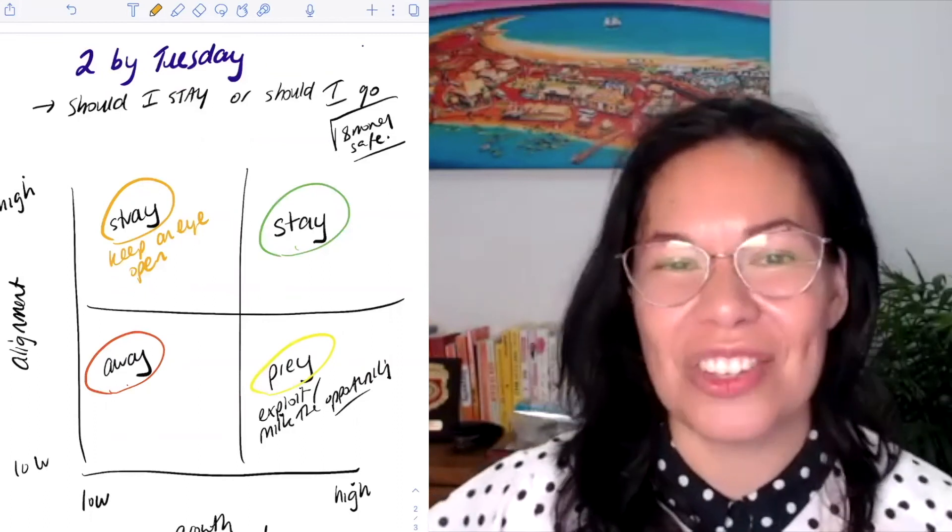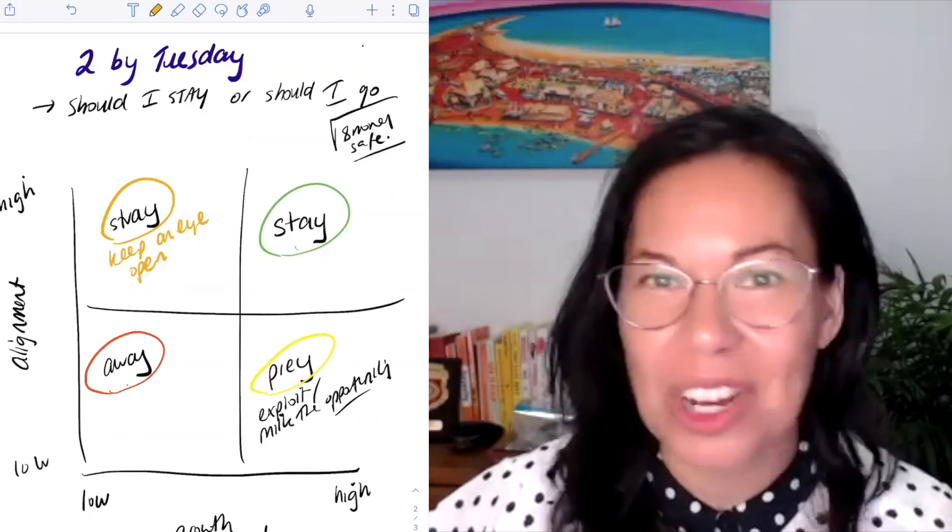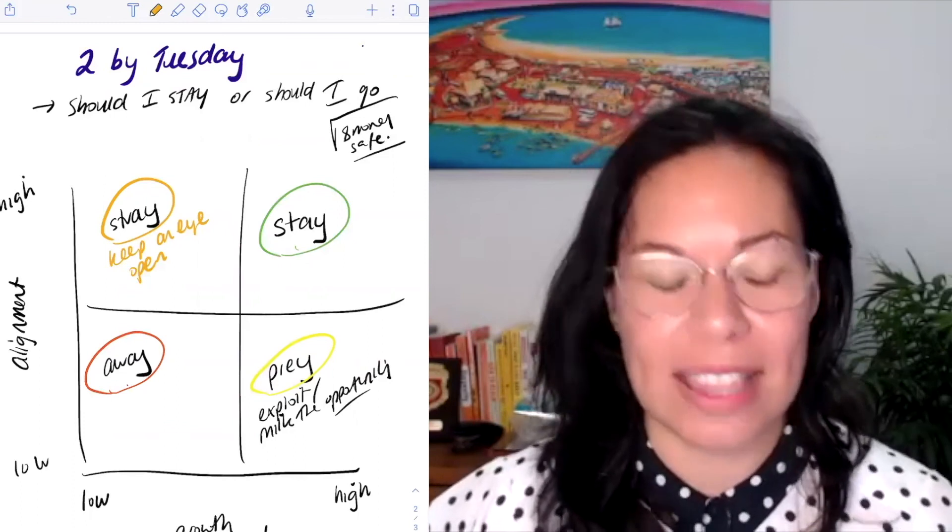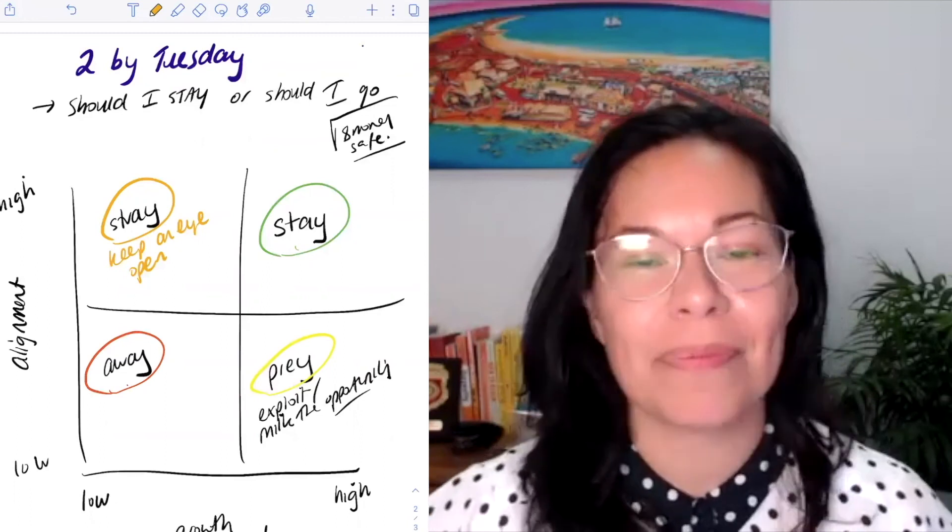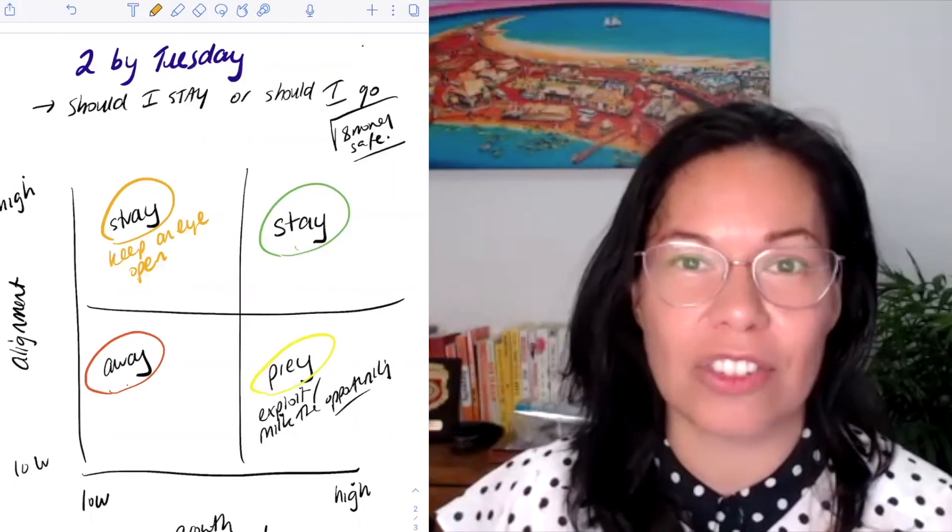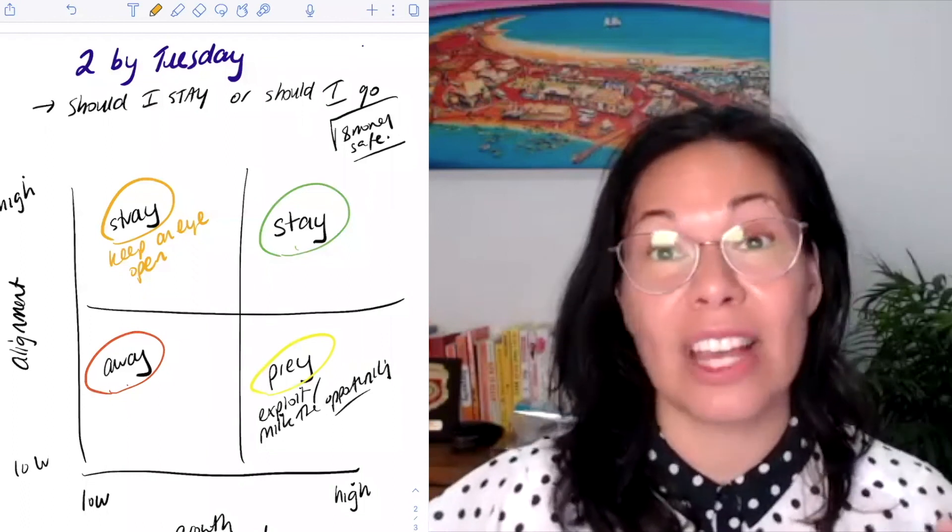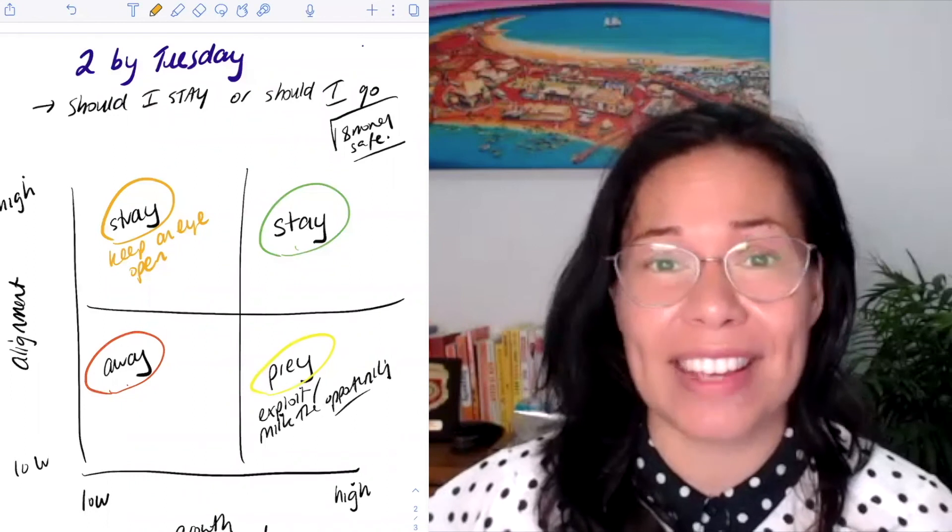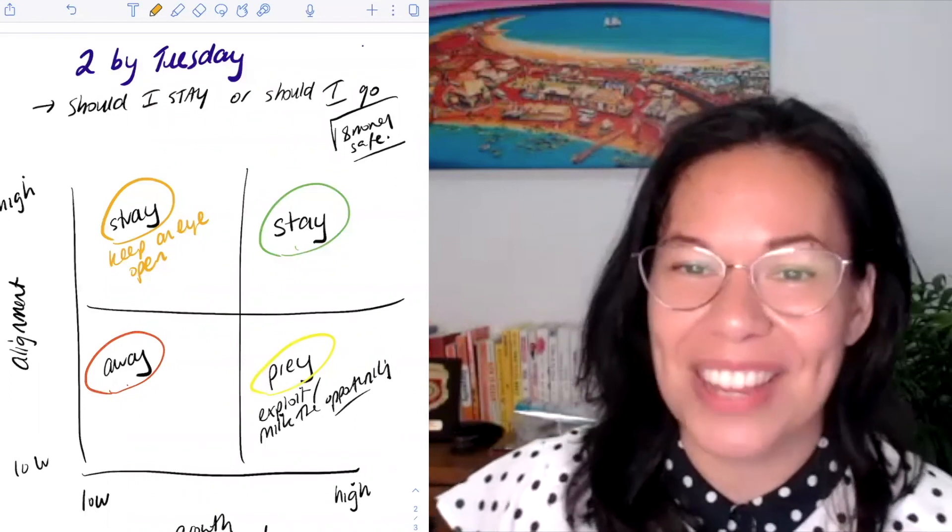Top left is you stray. You have high alignment and low growth potential, you keep an eye open. You're still working hard. You value the organization you're working for, but there might be an opportunity elsewhere to get the growth, or look and maybe challenge what you think growth looks like. Bottom left: you can't grow, there's no possibility for it, and you're really not aligned with where the company's going or what's actually happening. Then I think you should go away. See you in the next one. Thank you.